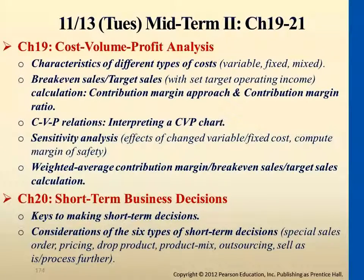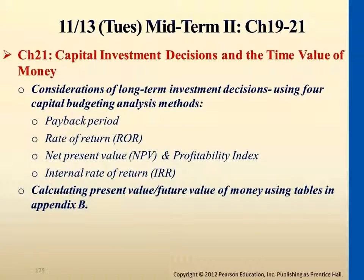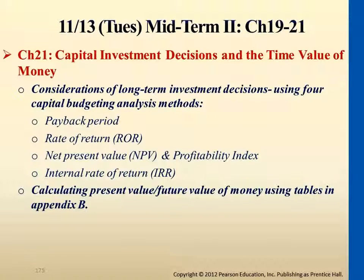I've also listed bullet points you definitely need to go through as a checklist. Some things not mentioned there, you can drop. I won't focus much on qualitative factors of investment projects — mostly the numerical side. Bring a number two pencil and calculator for the next exam. For PV factor and FV factor tables, you don't have to memorize the decimal points — those tables will be provided.